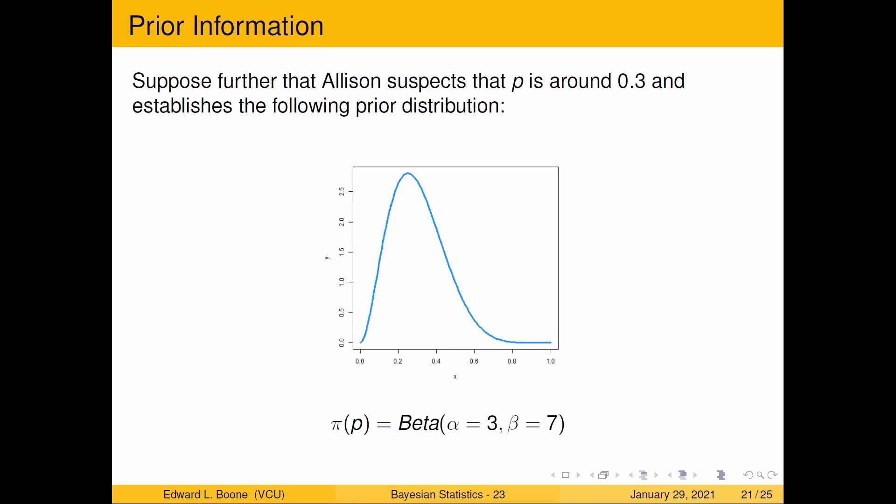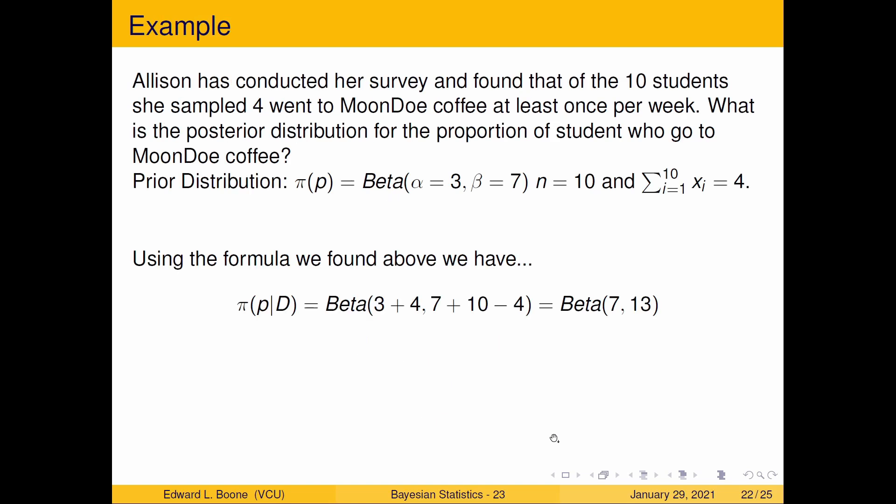Suppose Allison suspects that p is around 0.3 and establishes the following prior distribution. She has here beta—the prior distribution for p is beta, alpha equals 3, beta equals 7. Then we go and we see some data: n equals 10, and then the sum of the xi is equal to 4.